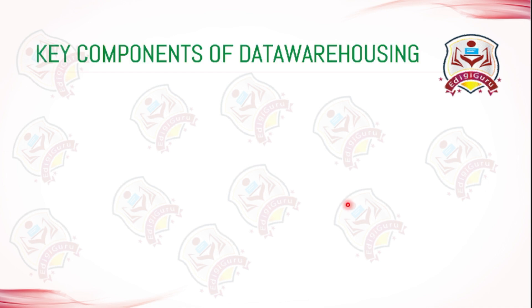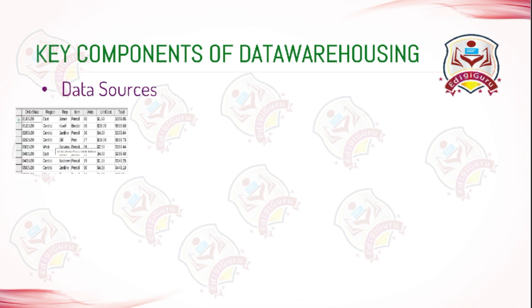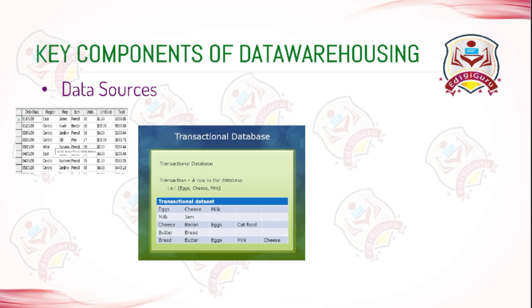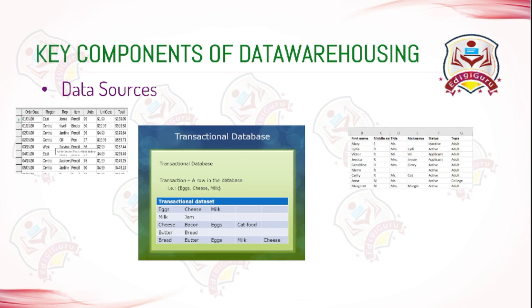Next, we will look at the key components of data warehousing. The first component is data sources. These are the sources from where the data originates. It could be flat files, transactional databases, spreadsheets, or any external data providers.